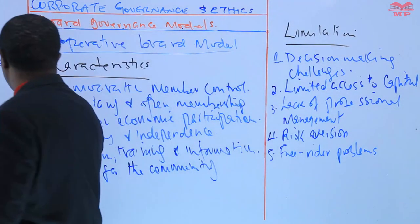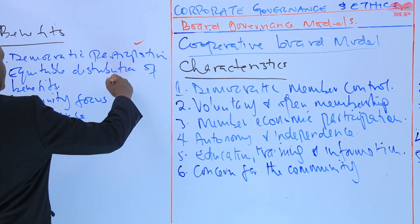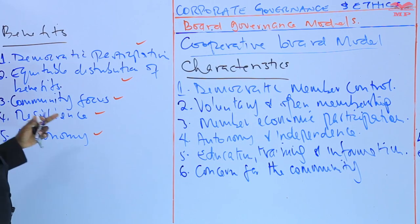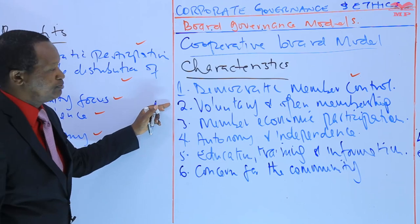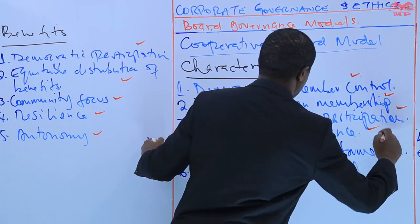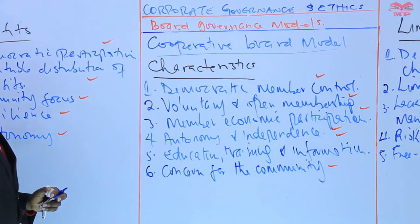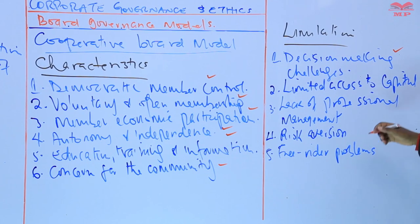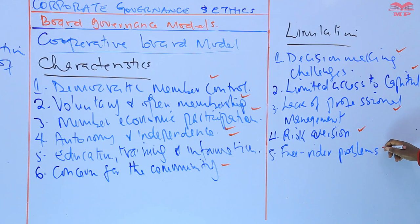In summary, we have identified five benefits: democratic participation, equitable distribution of benefits, community focus, resilience, and autonomy. There are six characteristics of the cooperative board model: democratic member control, voluntary and open membership, member economic participation, autonomy and independence, education/training and information, and concern for the community. We also highlighted five limitations: decision making challenges, limited access to capital, lack of professional management, risk aversion, and free rider problems.